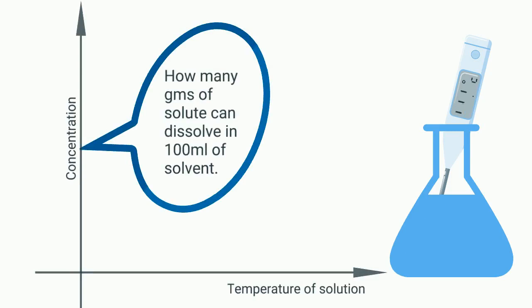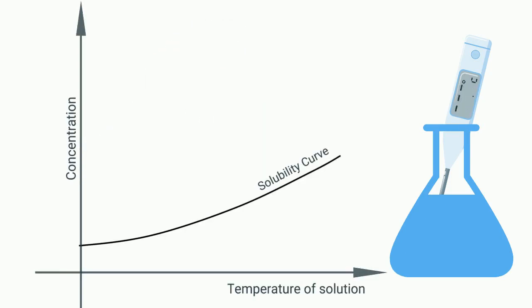To understand solution crystallization better, let's plot temperature of a solution like sugar in water against concentration of the solute. This is the solubility curve. It shows the limits of solubility.